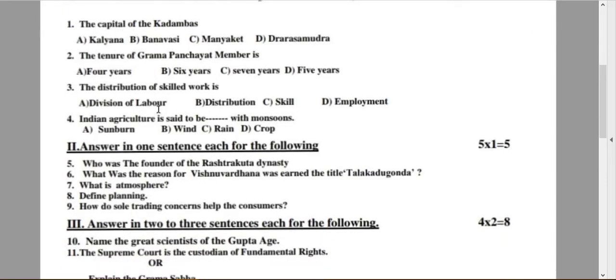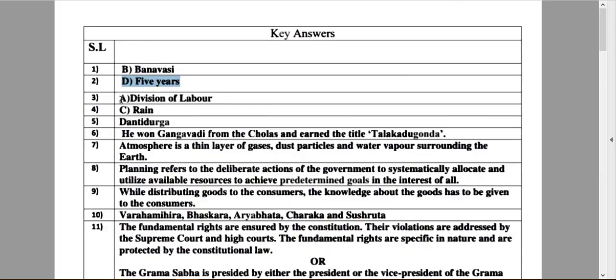The next question: the distribution of skilled work is? Option A: Division of Labor. Option B: Distribution. Option C: Skill. Option D: Employment. And the right answer is option A, Division of Labor.